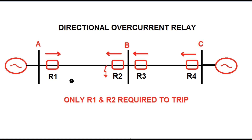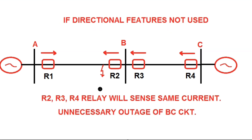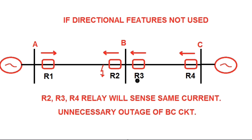Due to the fault, relay R1 will sense it, and also relay R2, R3, and R4 will sense the same current as the source is connected at substation C end. But only relay R1 and R2 are required to trip their respective circuit breakers to isolate the faulty circuit. If non-directional relays are used, relay R2, R3, and R4 will all trip, causing unnecessary outage of circuit BC.